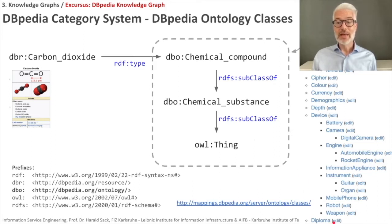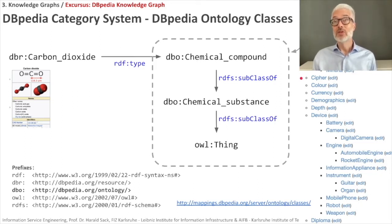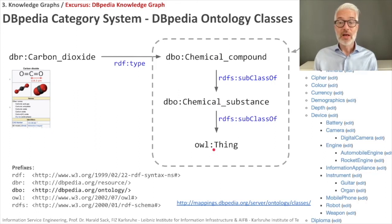There is a DBpedia ontology, accessible via a dedicated link, which provides the category system and backbone of DBpedia. A short segment of its class taxonomy shows, for example, a chemical substance with subclasses such as chemical compound, chemical element, and drug — and among drugs: combination drug, monoclonal antibody, or vaccine. This is selective and not necessarily the best top-down ontology, but creating an upper ontology is a difficult task. Carbon dioxide is of type chemical compound; according to the ontology, chemical compound is a subclass of chemical substance, which is a subclass of thing.